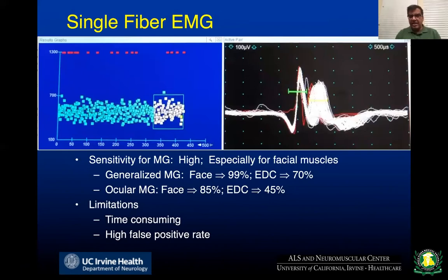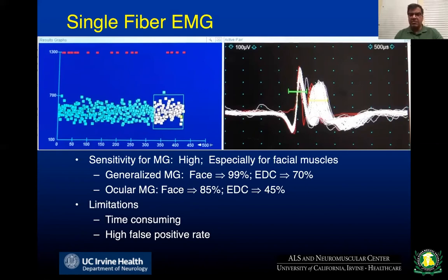Single fiber EMG, a highly specialized test only available in a few specialized centers, is almost 100% sensitive, especially when done from a face muscle or orbicularis oculi. The problem is it is time consuming, patients don't tolerate it very well, and there is a very high false positive rate, especially in patients with myopathy, motor neuron disease, and peripheral neuropathy.